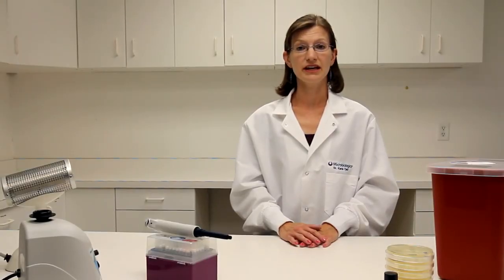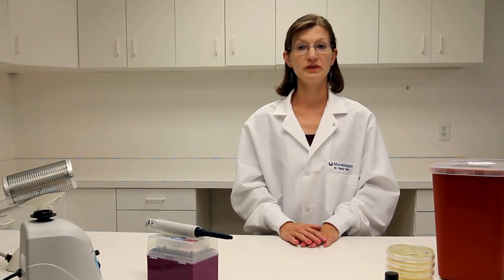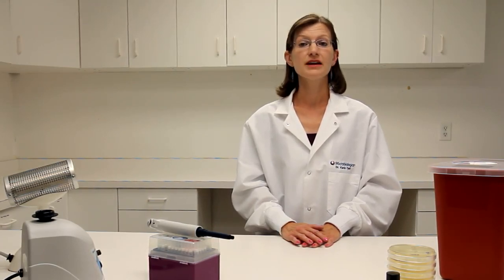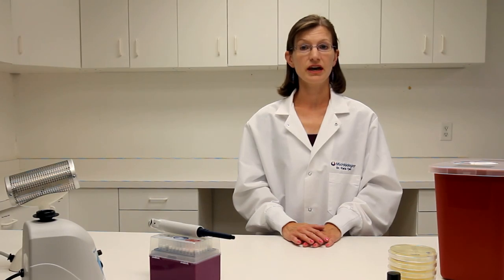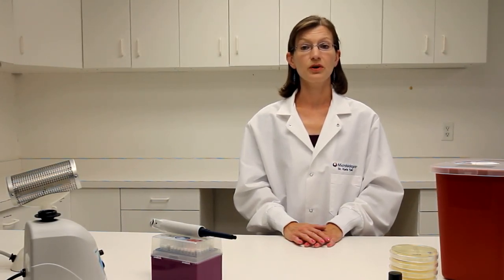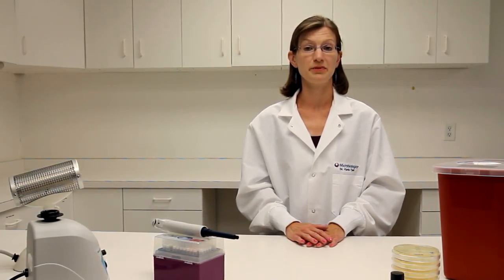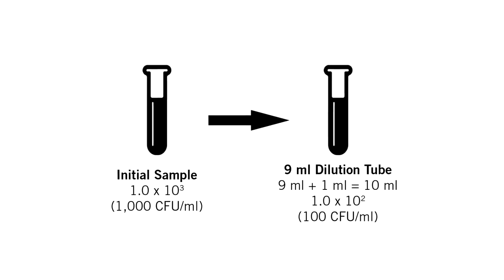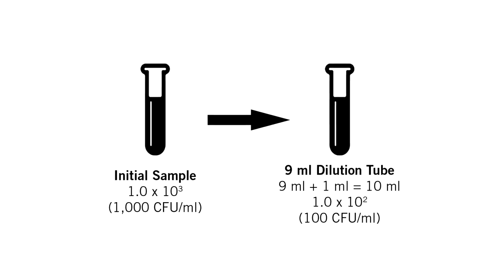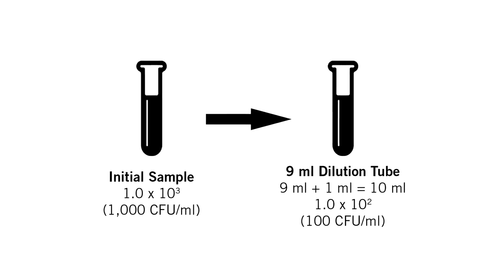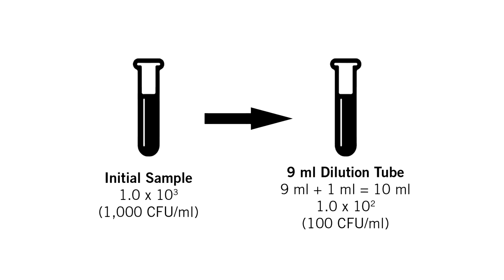A single log dilution is a 10-fold dilution, which means the concentration is decreased by a multiple of 10. To complete a 10-fold dilution, the ratio must be 1 to 10. The 1 in the ratio represents the amount of sample added and the 10 represents the total size of the final sample. For instance, a sample size of 1 milliliter would be added to 9 milliliters of diluent to equal a total of 10 milliliters.